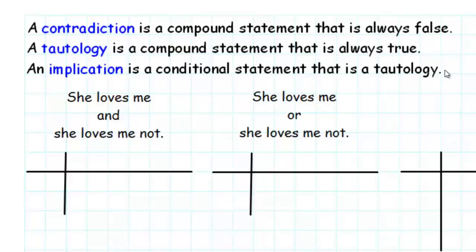Usually when we make a truth table, we get a combination of trues and falses, but there are a couple of special cases, and they have special names.